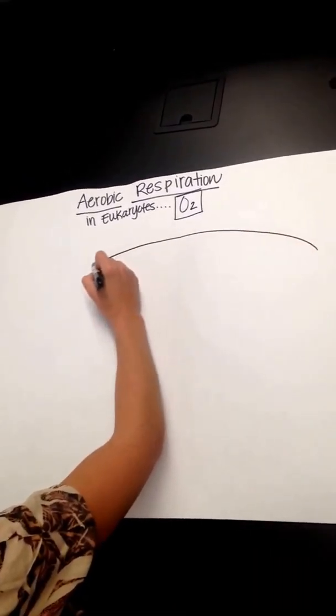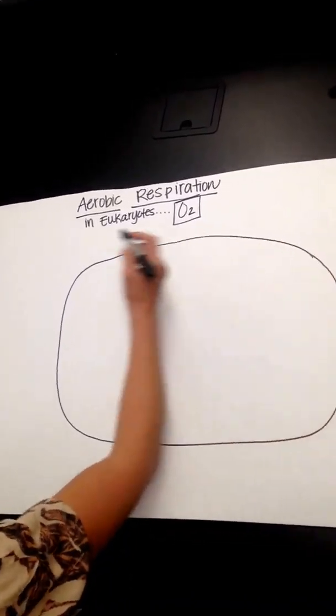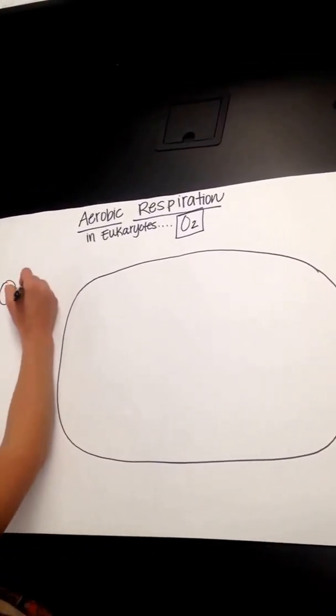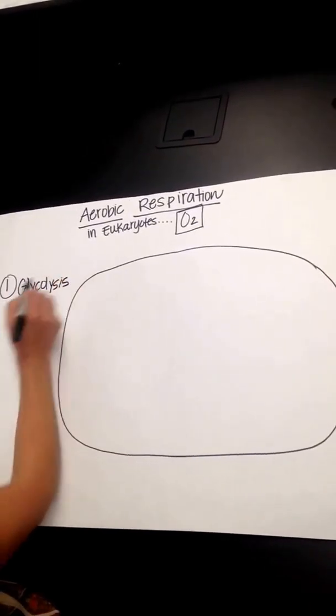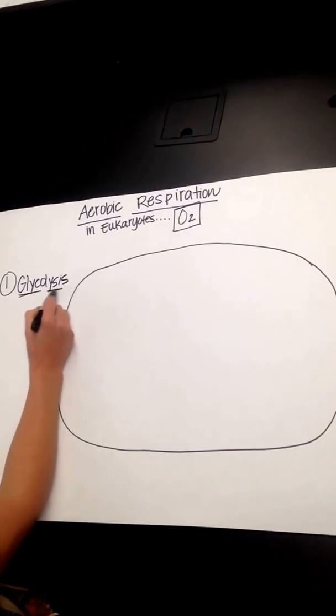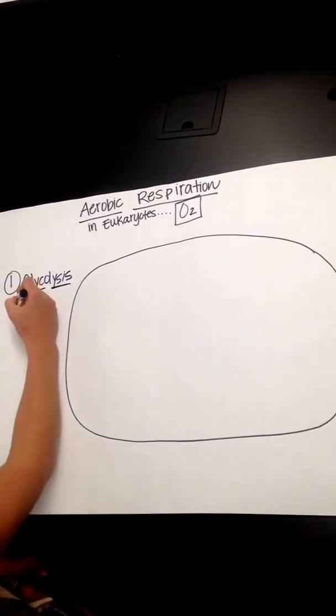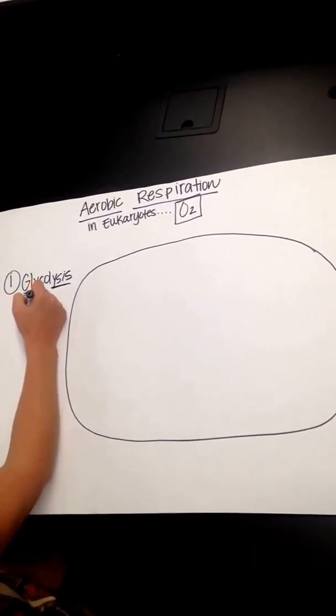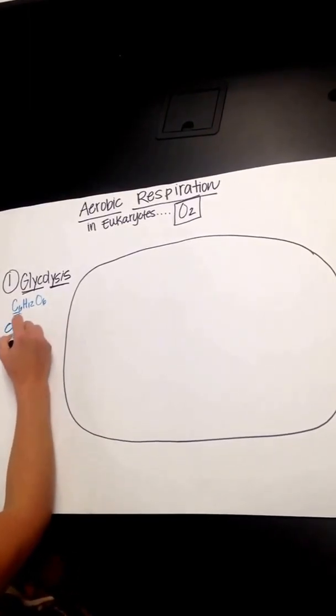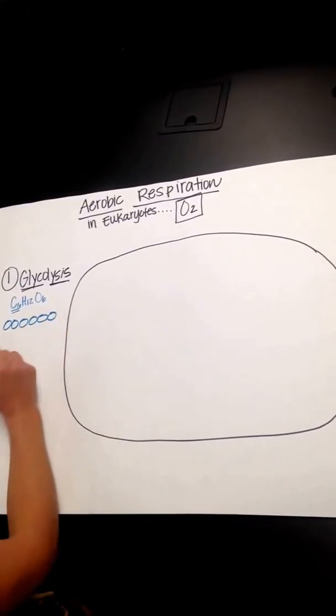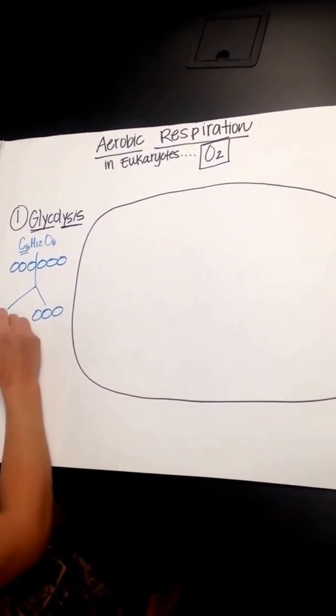The first part is actually just outside the mitochondria in the cytoplasm. Step one is glycolysis. And this step is exactly what it looks like. Glyco, sugar, lysis, break. So we take a six-carbon molecule, glucose. Glucose has six carbons, so we take a six-carbon molecule, glucose, and we break it apart into two three-carbon molecules.